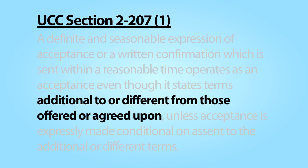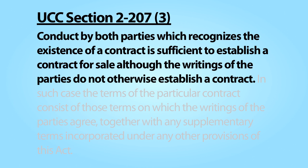Subpart 1 makes a distinction between additional terms and different terms. As a rough guideline, a term is different if it varies or contradicts something provided in the offer or written confirmation. A term is additional if it adds new matter not covered in the offer or written confirmation. We need to consider one additional situation in which the UCC finds a contract to exist despite conflicting language in the parties' writings — that covered by Section 2-207, Subpart 3.